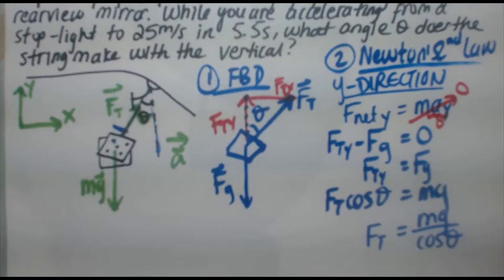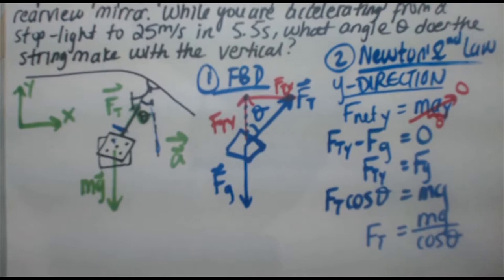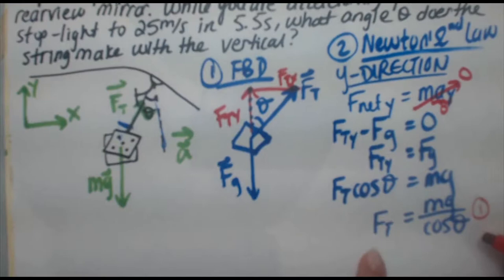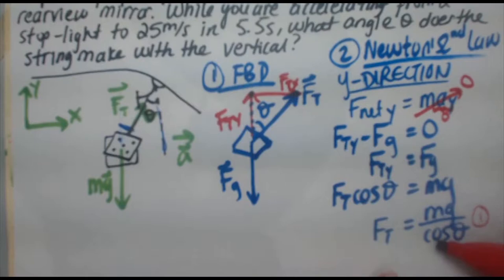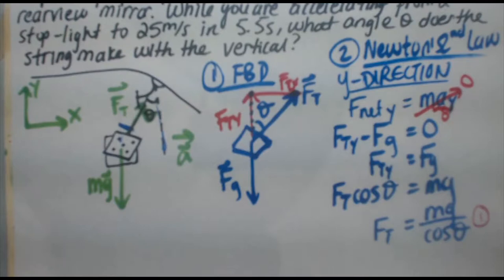Now isolate for force of tension. FT equals mg over cos theta. Now if you're wondering why I didn't isolate for cos theta, because you might be thinking you're looking for theta, you should isolate for that. Well, remember I said we're going to need two equations with two unknowns. So if this is going to be my first equation, then I get an equation number two also in terms of FT. If I set FT equal to FT, they disappear, and all I'm left with is the thetas and mass accelerations.